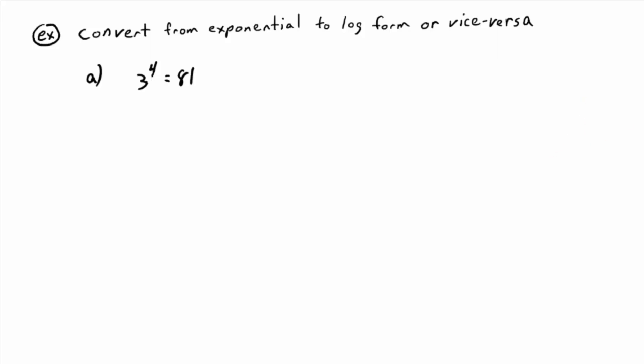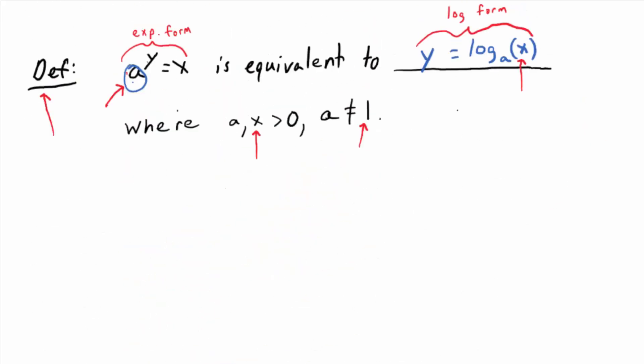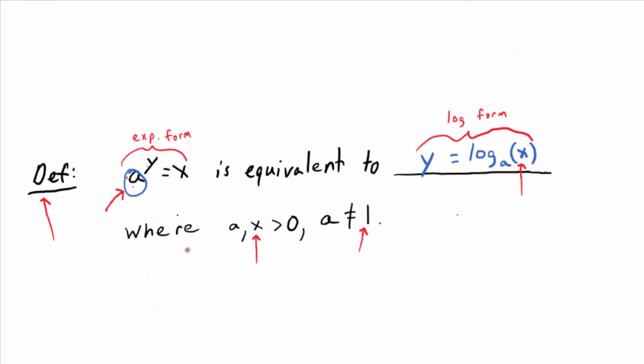And what you don't do is you don't go up here to the definition. So let me rewrite it so it's more clear. So a to the y equals x is equivalent to y equals log base a of x. What you don't do is say, oh, this guy is like y, this guy is like a, this guy is like x. That's the slow way to do it.